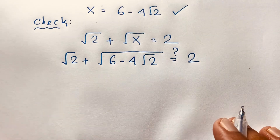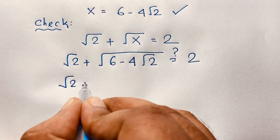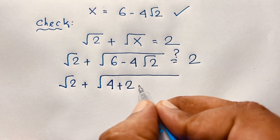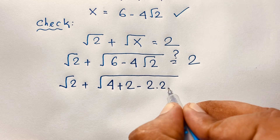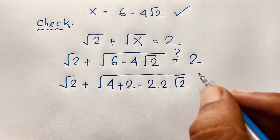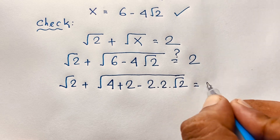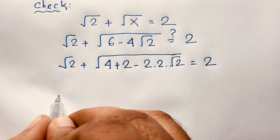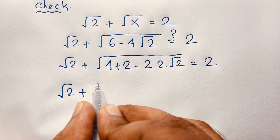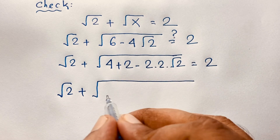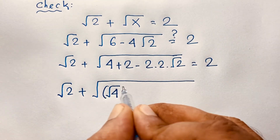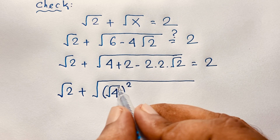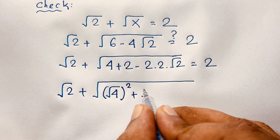Now you can see: square root 2 plus square root of (6 minus 4 square root 2). Note that 6 equals 4 plus 2, and 4 square root 2 equals 2 times 2 times square root 2. So inside the square root we have 4 plus 2 minus 2 times 2 times square root 2. Then square root 4 power 2 — the square root cancels — giving 4, and then 2, giving square root 2.